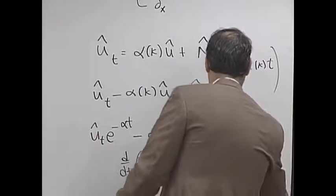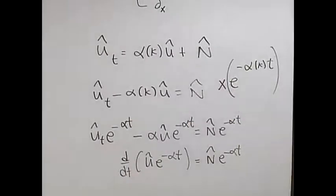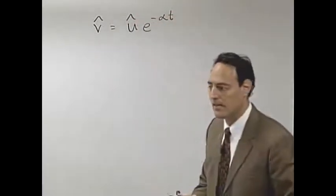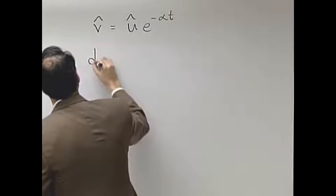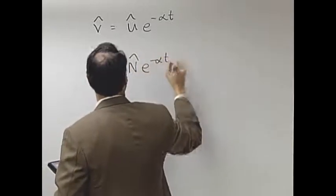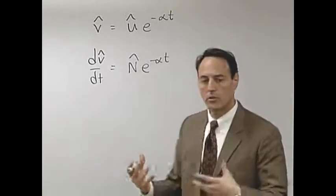So what I want to do then is make a transformation of variables. I'm going to define a new variable, call it v̂, which will be û e^(-αt). And then this equation that we have here simply becomes dv/dt is equal to N̂ e^(-αt).